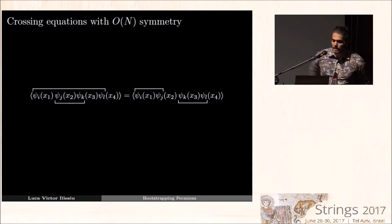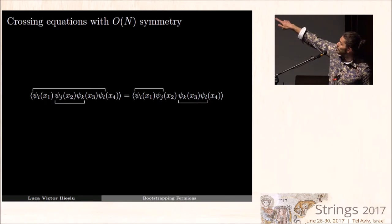Today I'll be studying the crossing symmetry for the four-point function of four identical fermions. More specifically, I'll be studying theories with a global ON symmetry and I'll impose that the fermions that appear in the four-point function are actually in the vector representation of the global ON symmetry.